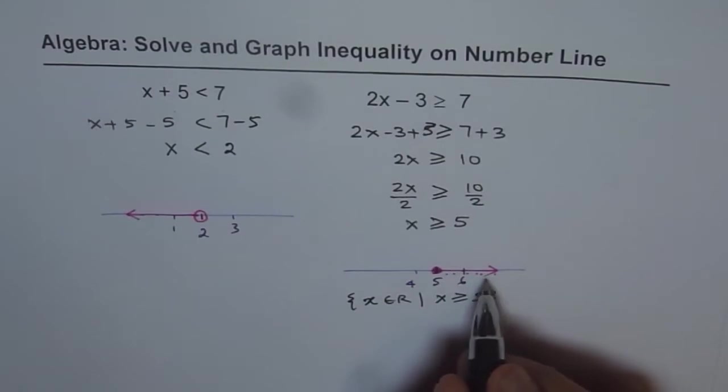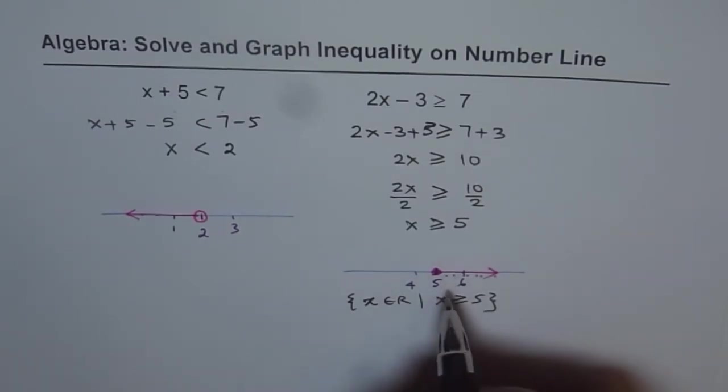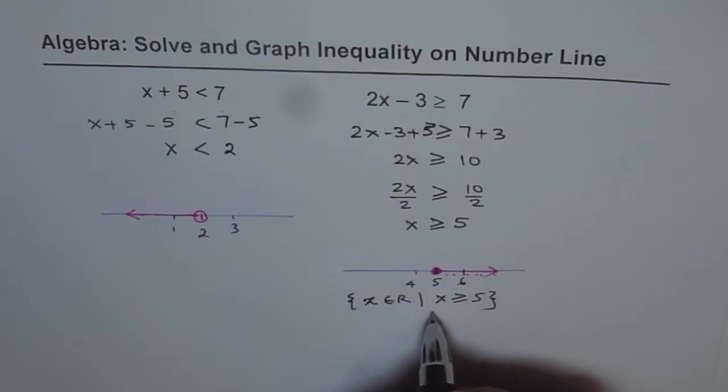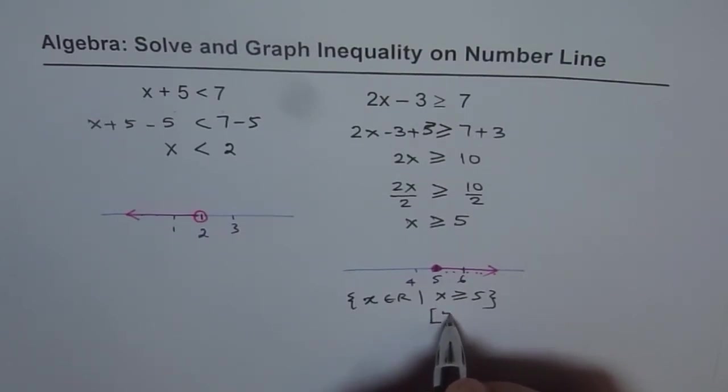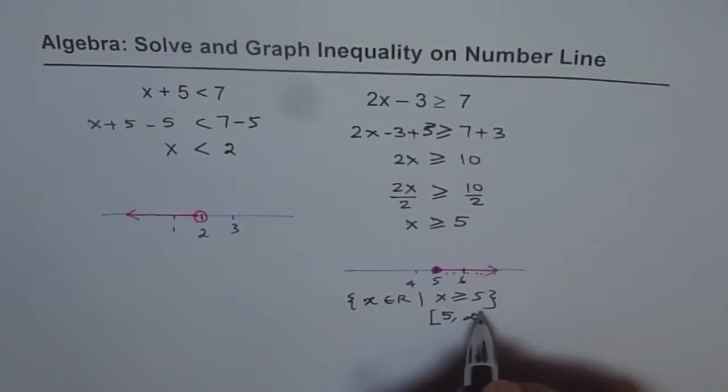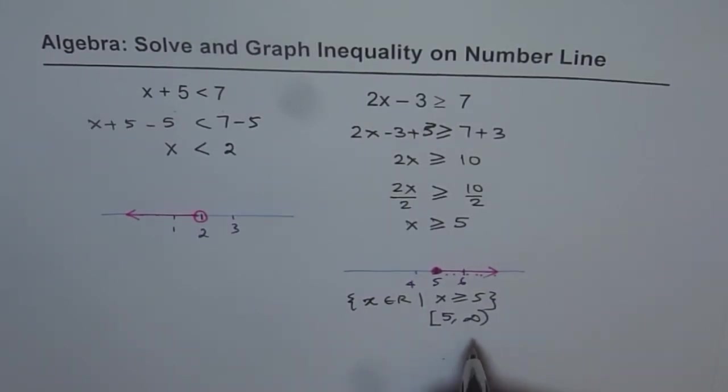Another way to write the same solution is in interval notation. So interval notation is a very convenient way of writing solution. In that notation, we can write here 5 is included. But included numbers are with a bracket, square bracket. So square brackets indicate included from 5 to infinity, and infinity can never be included. So that is the way we can write an interval notation.